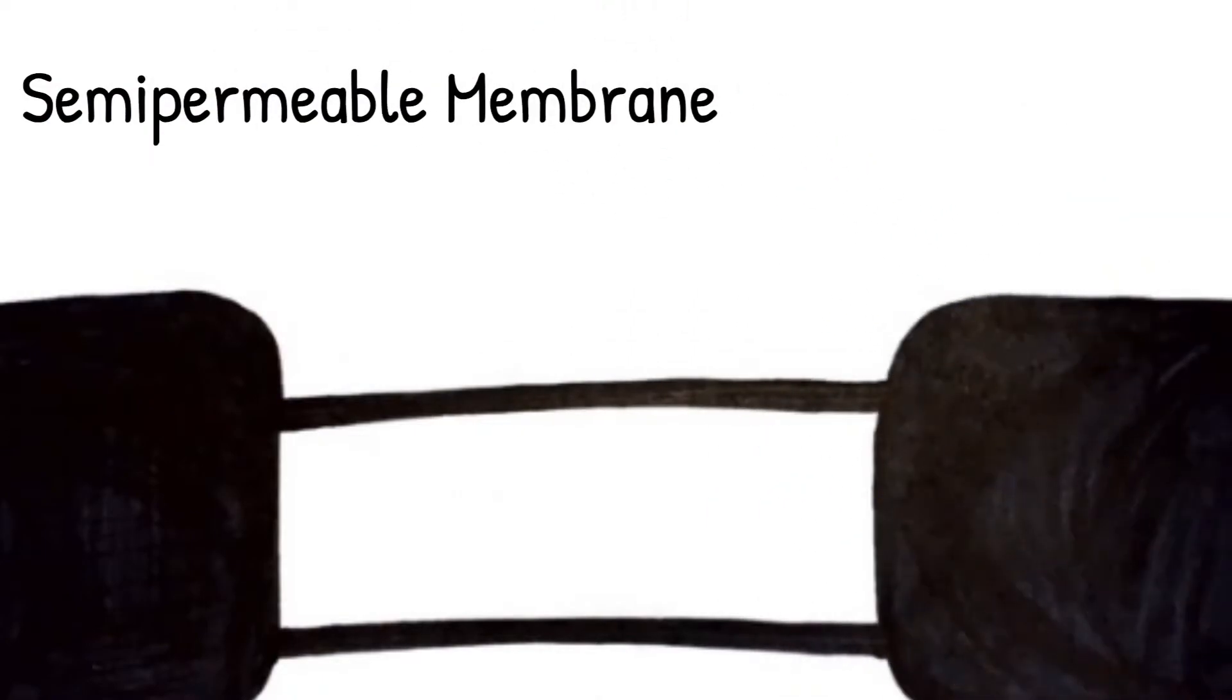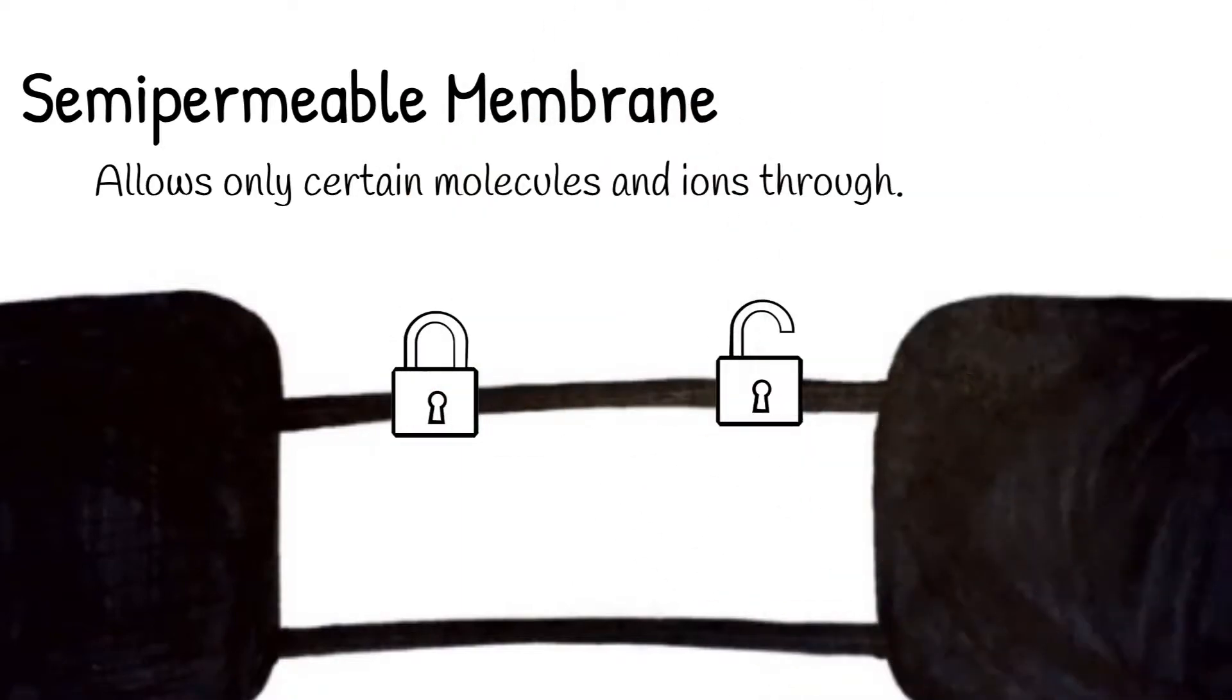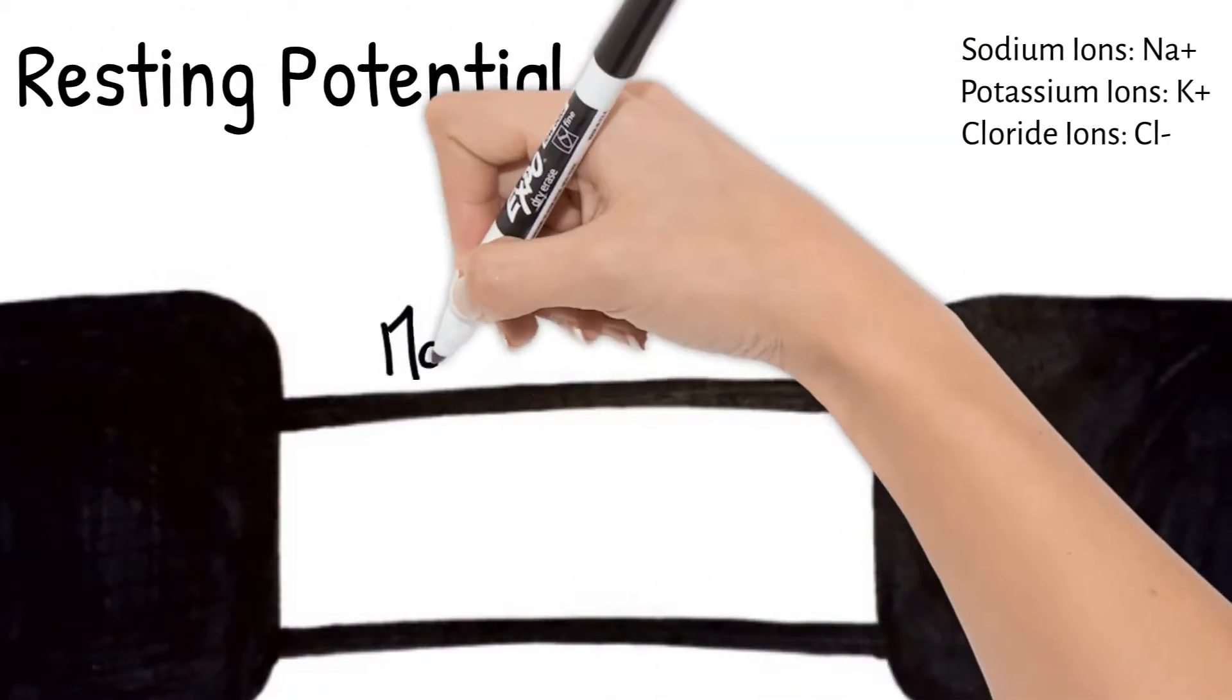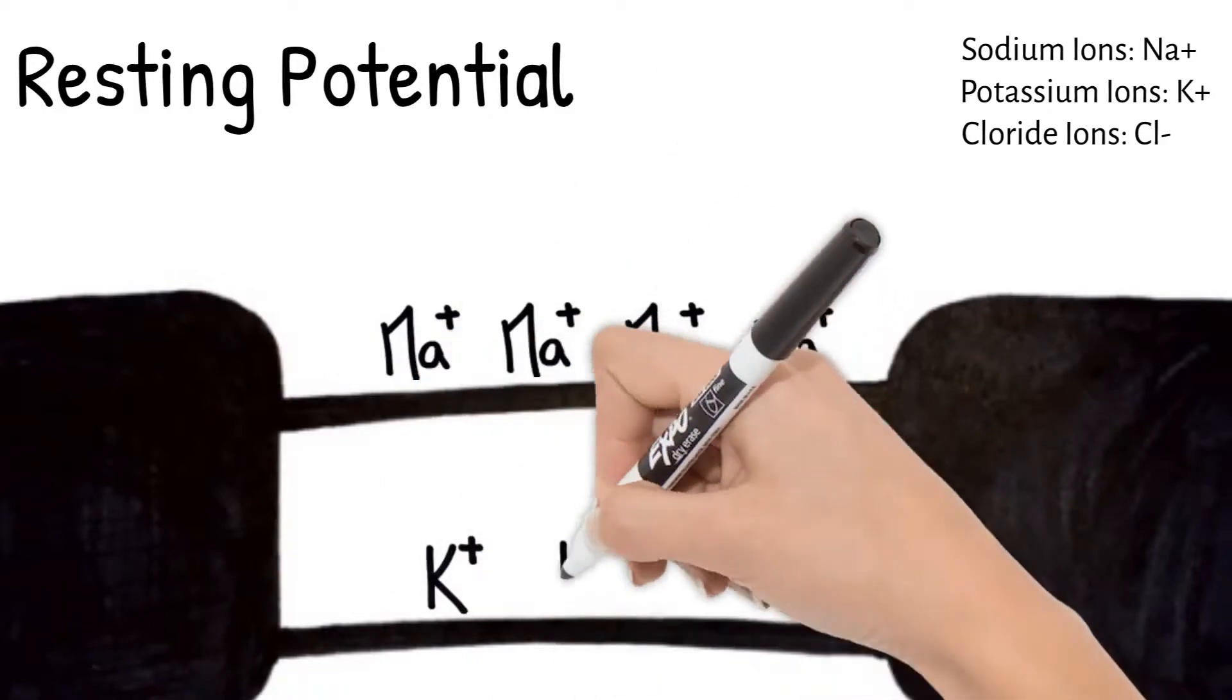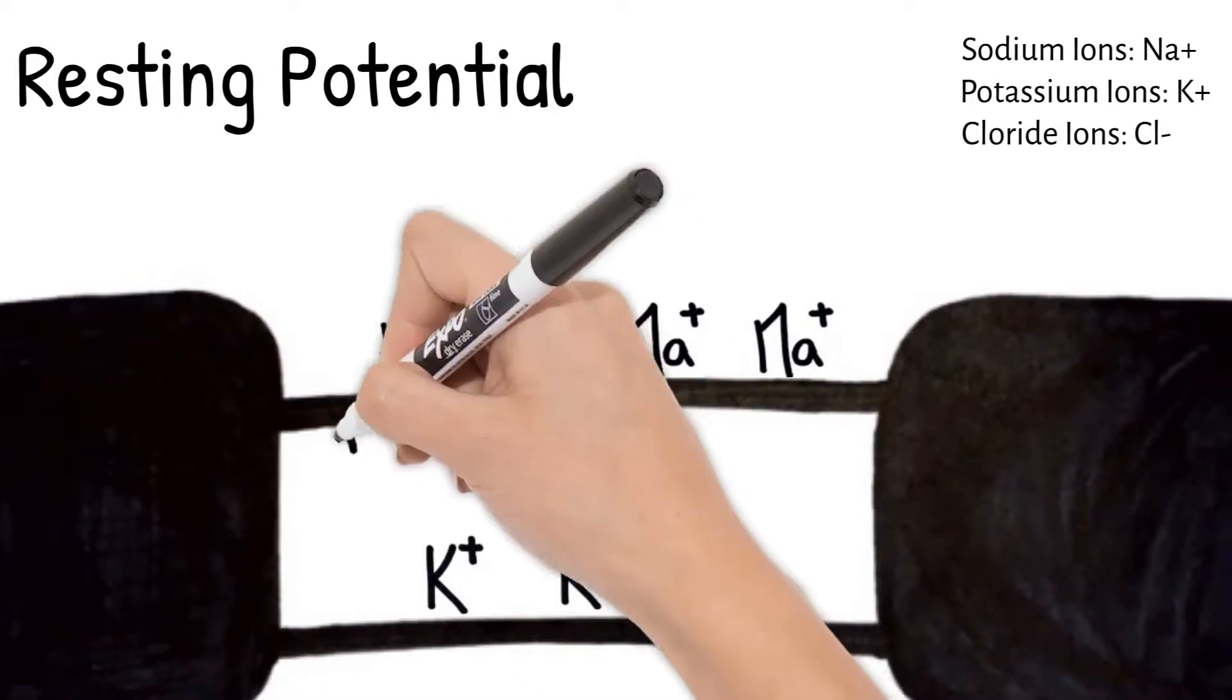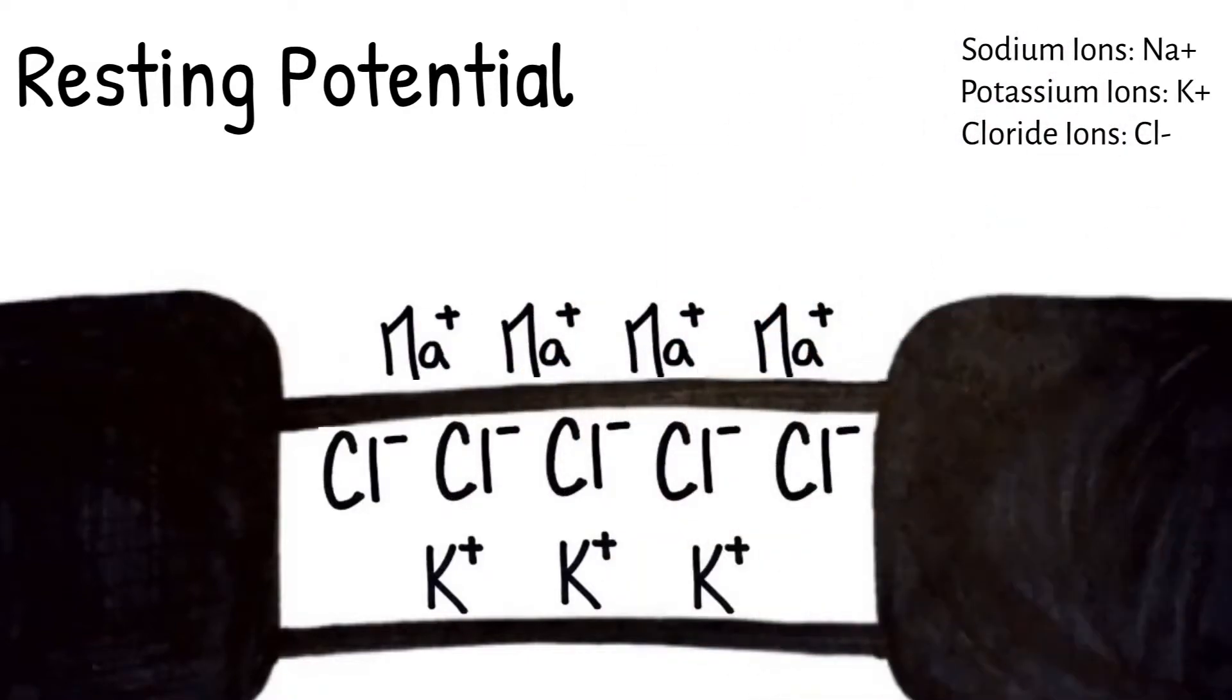Like other cells, neurons have a semi-permeable membrane, which has special gates that control what is allowed in and out of the cell. When there's no message being carried by the neuron, it's at rest. At this time, there are more sodium ions outside than inside, and these are positive ions. There are also more potassium ions inside than outside the neuron, and they are also positive. There's chloride ions inside as well, and they are negative. There's also other negative proteins and things inside the neuron.